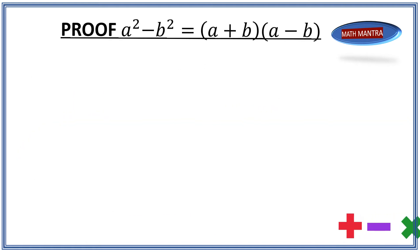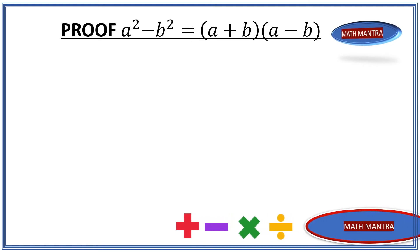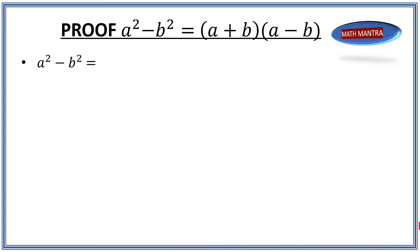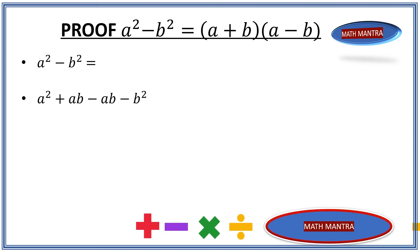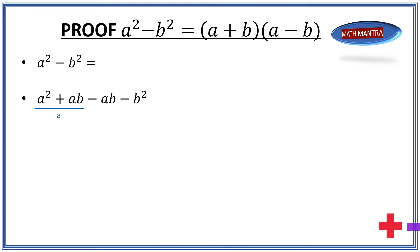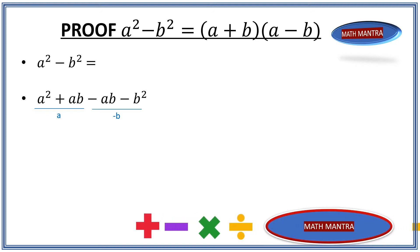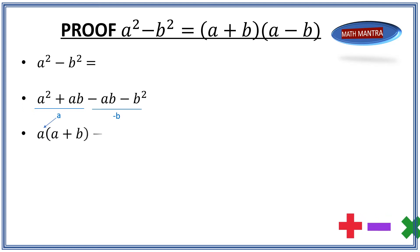So if we have to prove the equation mathematically, we can start with a squared minus b squared and then add a times b and deduct a times b. In the first two terms we can take out the a, and in the second two terms we can take out the minus b. Once we take a common out from the first two terms, inside the bracket we get a plus b.